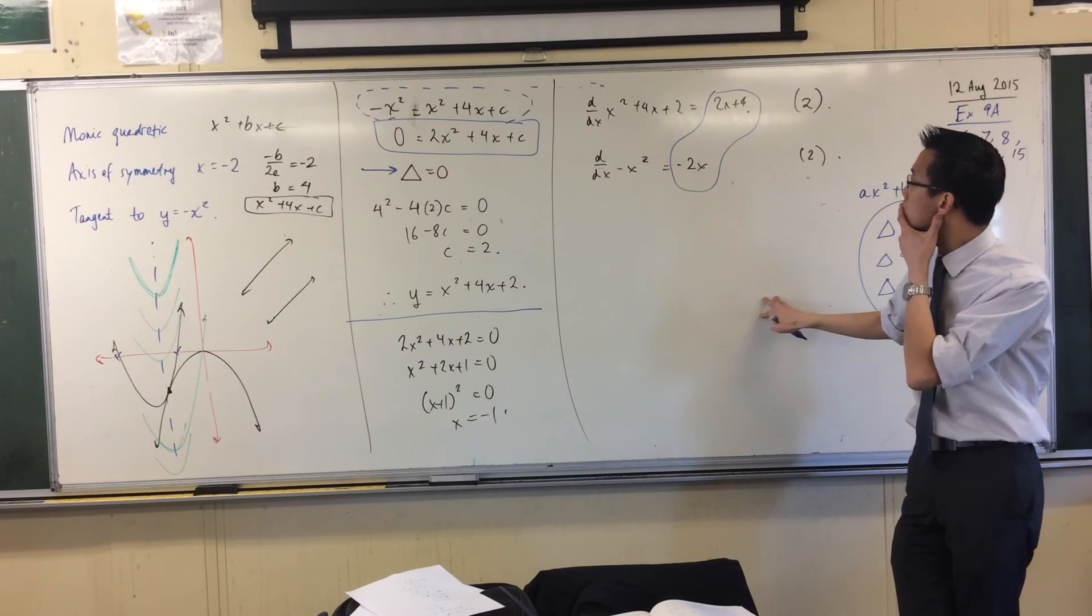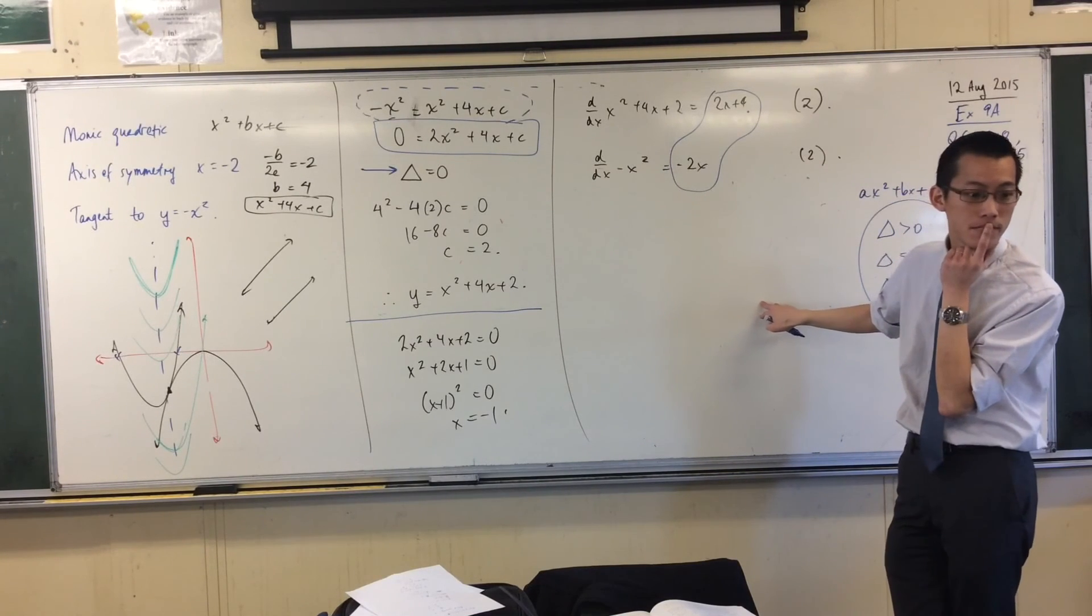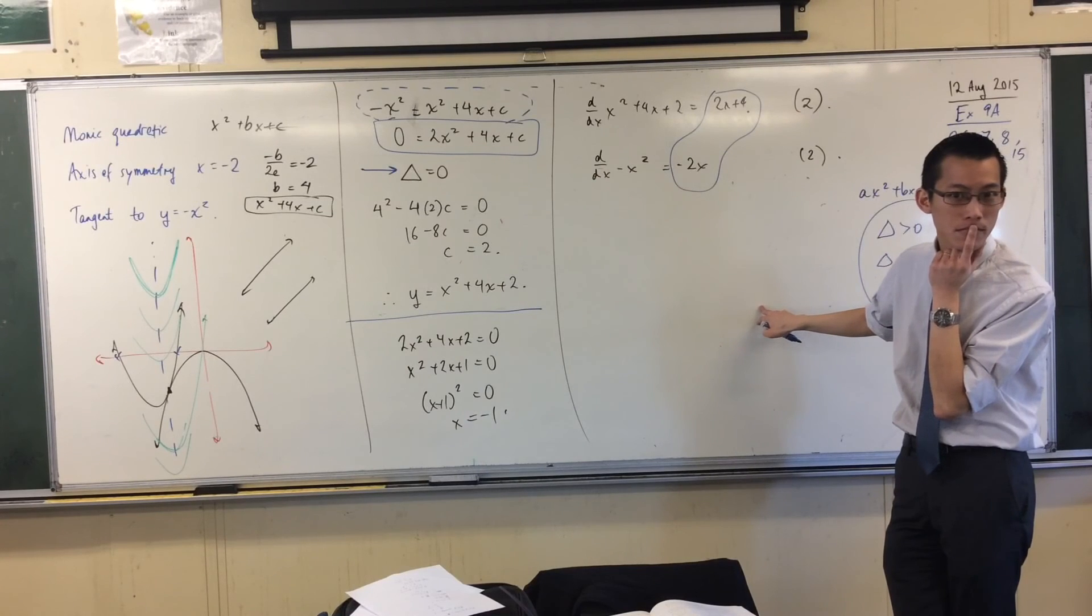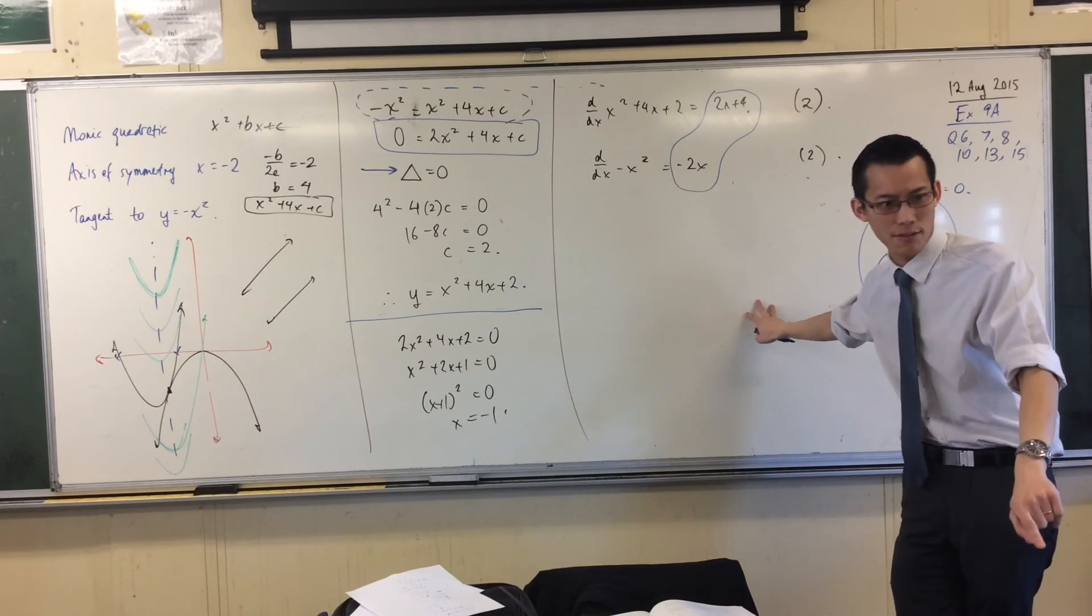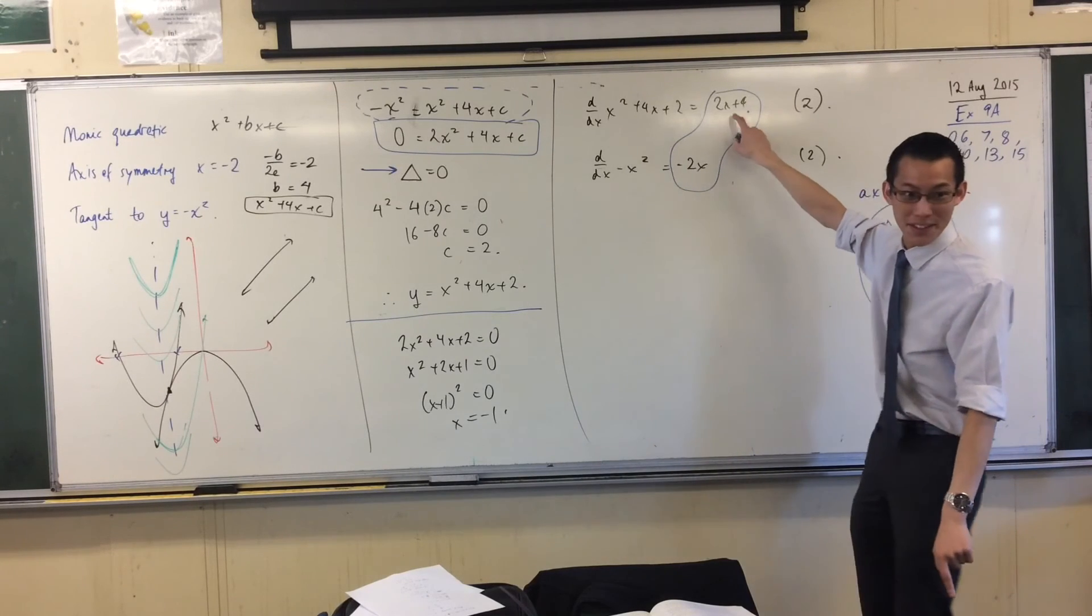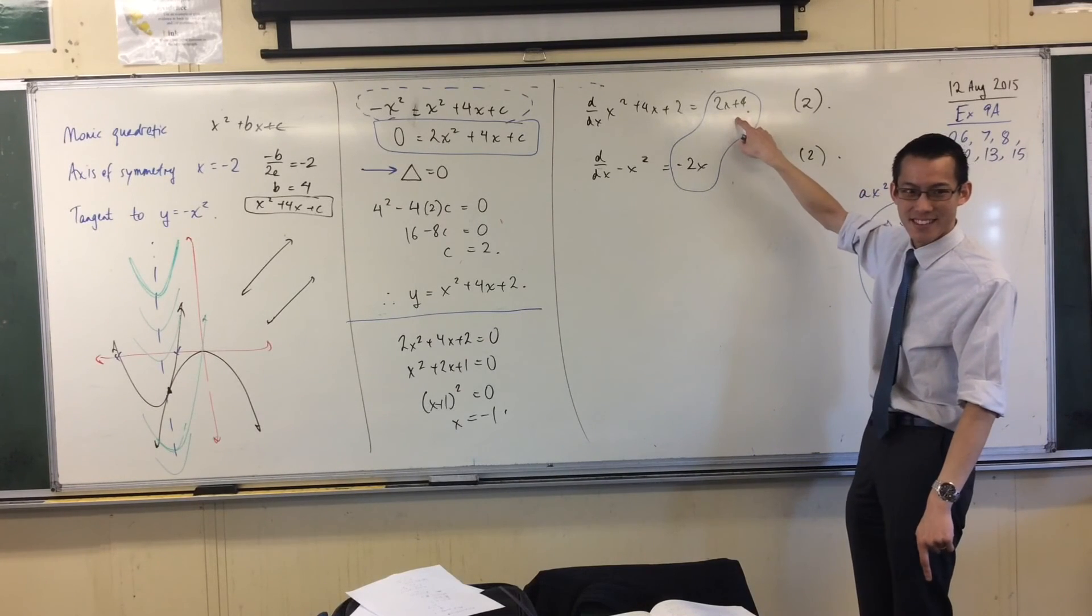So first, we know the derivative of one of them is x squared plus 4, x plus 2. Wait, wait, wait, pause, pause, pause. That's not the derivative, that's the function itself. This is the derivative.